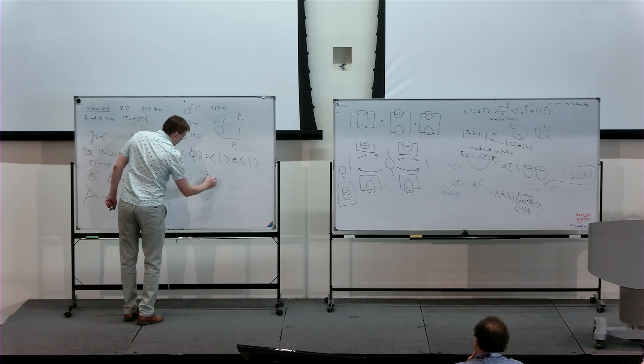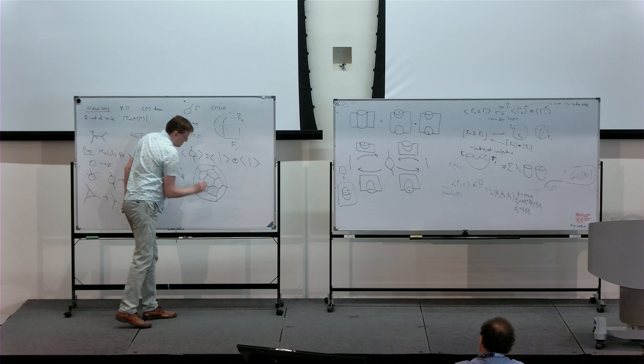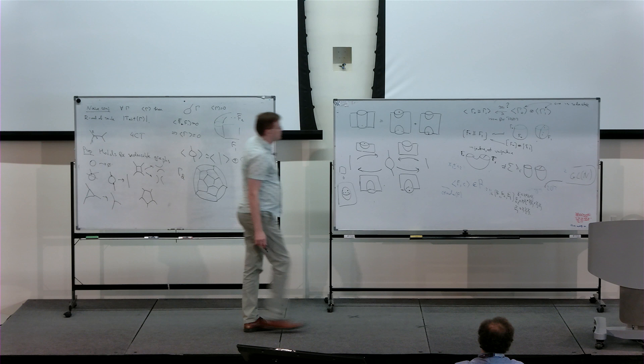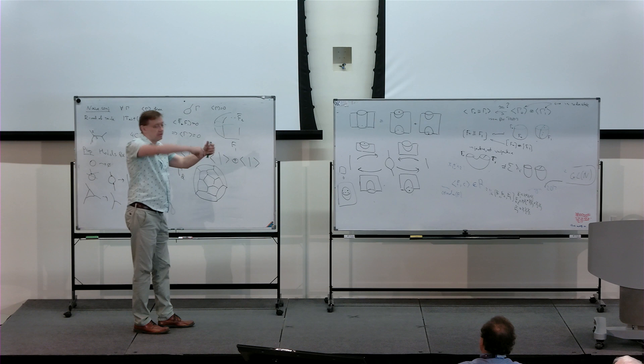Next time I'll briefly say the relation to the four-color theorem and to the work of Kronheimer and Mrowka. This dodecahedron graph is the smallest graph for which we don't know the answer — we don't know the size of the state space, and we don't know whether, if you take two copies of this graph, the monoidal map is an isomorphism.